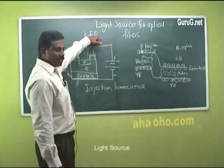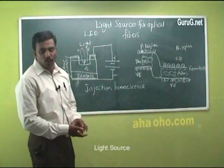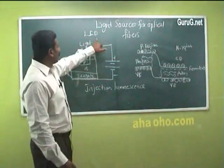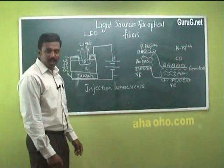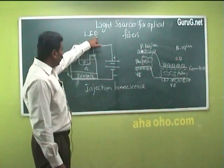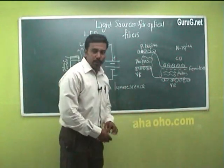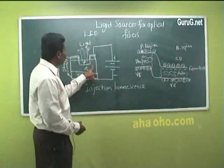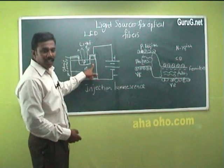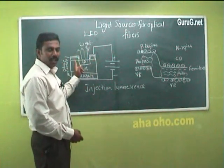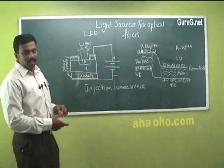First, let us look at LEDs. An LED is a P-N junction diode which directly converts electrical energy into light energy. This P-N junction works on the principle of injection luminescence. That is, when the P-N junction is forward biased, the majority carriers from the N region move to the P region, forming excess minority carriers in the P region.